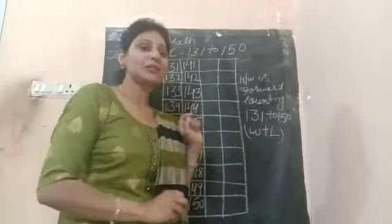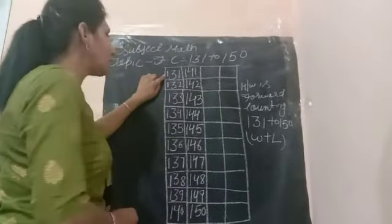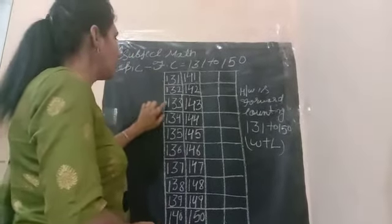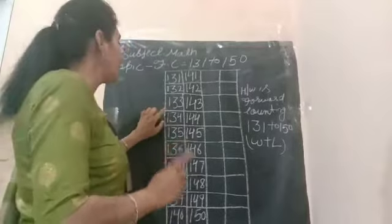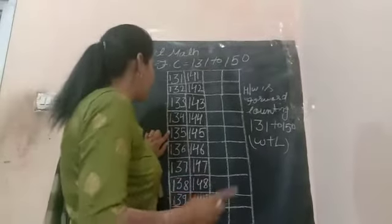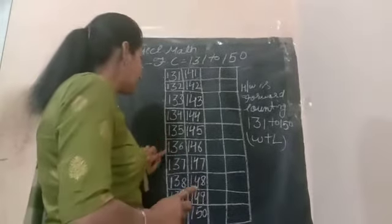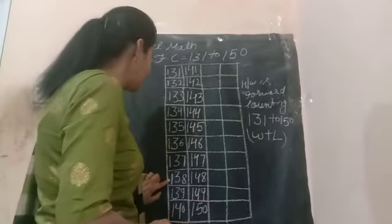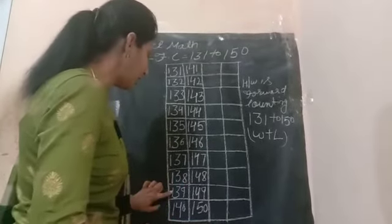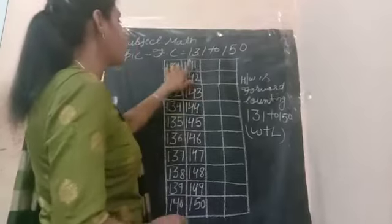Now I will repeat this. 131, 132, 133, 134, 135, 136, 137, 138, 139 and then 140. Next line,